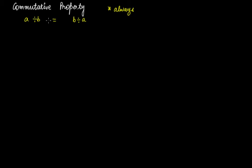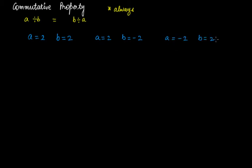Suppose a is 2 and b is 2; a is 2 and b is minus 2; a is minus 2 and b is 2. We have three cases. If you do a divided by b in all these cases — the first one, the second one, and the third one — in the first case this will be 2 divided by 2.